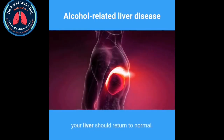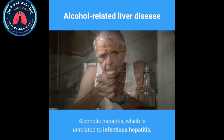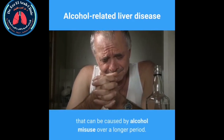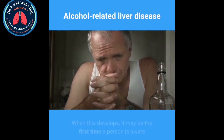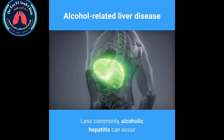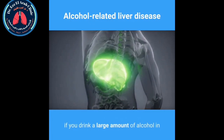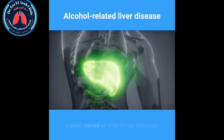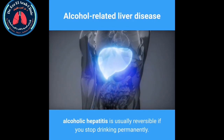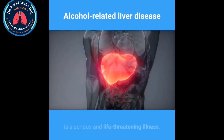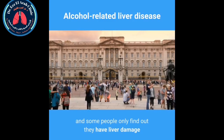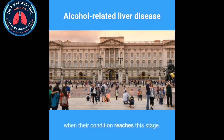Alcoholic hepatitis, which is unrelated to infectious hepatitis, is a potentially serious condition caused by alcohol misuse over a longer period. When it develops, it may be the first time a person is aware they are damaging their liver through alcohol. Less commonly, it can occur after binge drinking. Mild alcoholic hepatitis is usually reversible if you stop drinking permanently. However, severe alcoholic hepatitis is a serious, life-threatening illness — many people die from it each year in the UK.